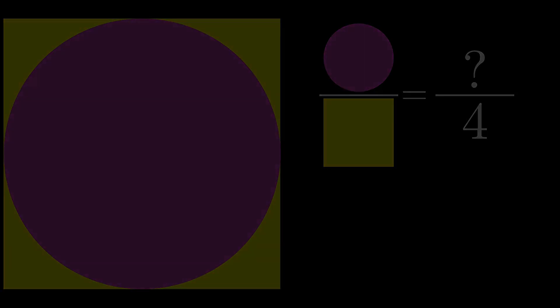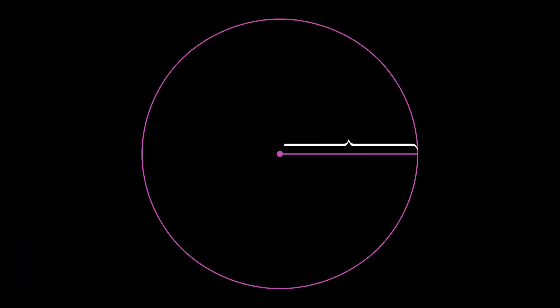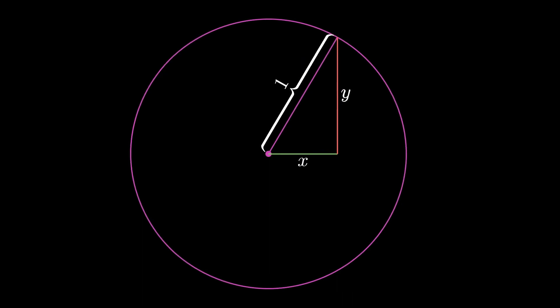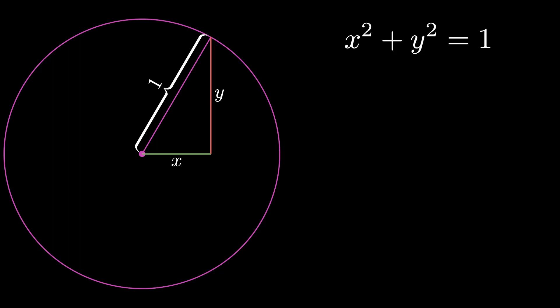All right, so now let's back up again and think about this from a math perspective. Inside that circle, we have the relationship of the Pythagorean theorem. So in this triangle, we have x squared plus y squared equals 1.